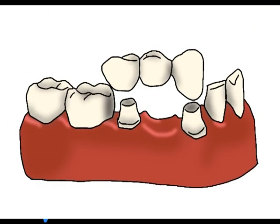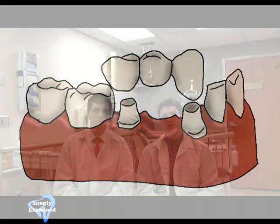A bridge uses neighboring teeth as supports for a fake tooth suspended between them. The procedure is similar to getting a crown in that the neighboring teeth are shaped to receive the bridge, a mold is taken of the teeth, the bridge is made, and then glued into place with a special dental cement.